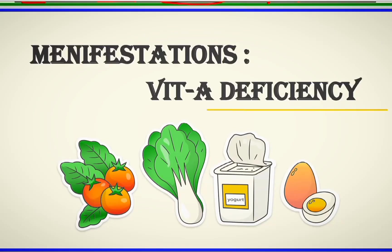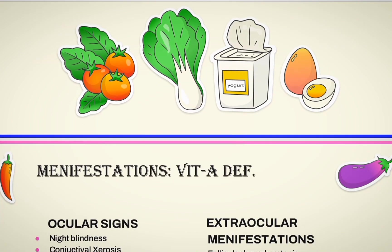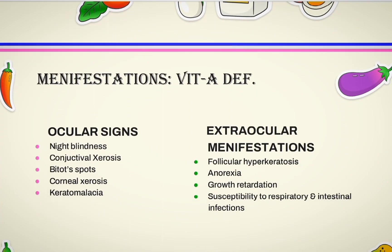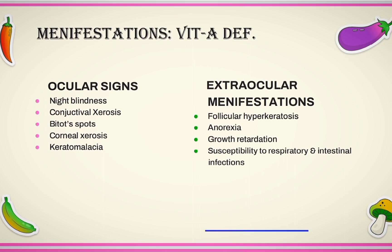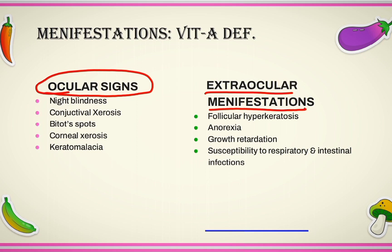In this part we'll be discussing the manifestations of vitamin A deficiency. Vitamin A deficiency can be manifested in two ways: one way is by the ocular signs, and another way is by the extraocular manifestations.